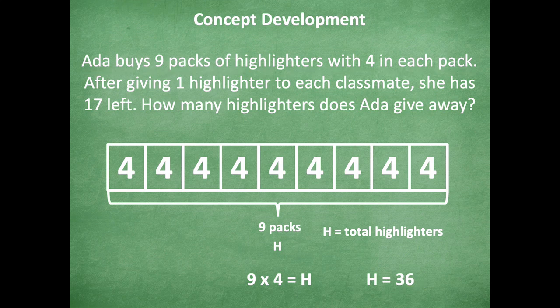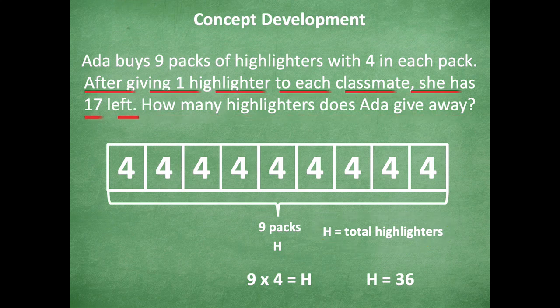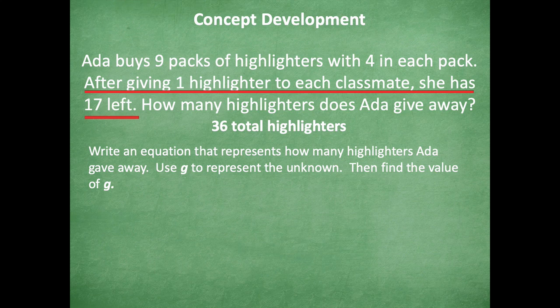Did we solve the problem of how many highlighters Ada gives away? Not yet. We found out the total was 36. Now we need to figure out: after giving one highlighter to each classmate, she has 17 left. She started with 36 and has 17 left. Write an equation that represents how many highlighters Ada gave away — use G to represent the unknown, then find the value of G.